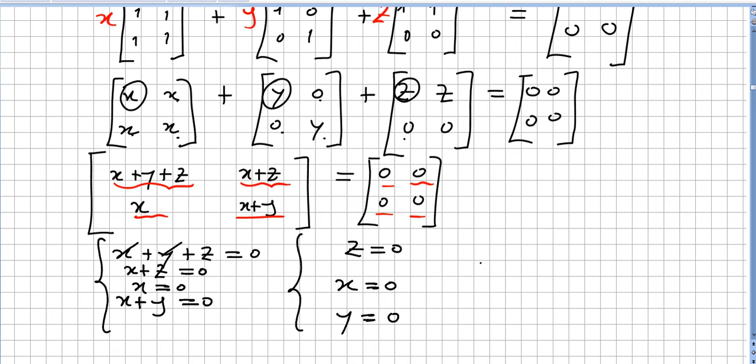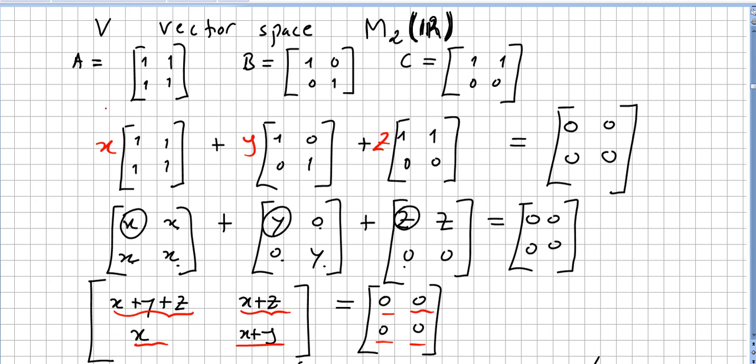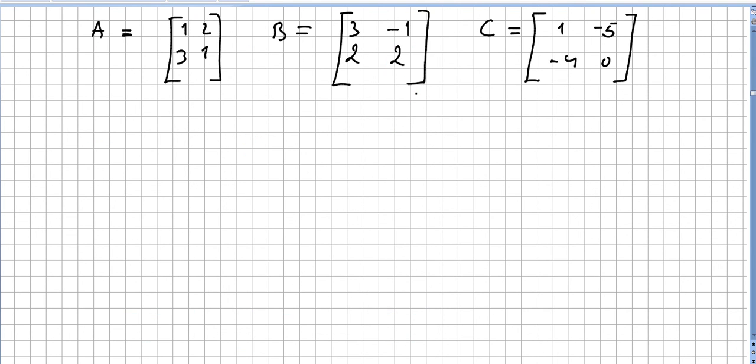So the only way that xA plus yB plus zC to be 0 is if x is 0, y is 0 and z is 0. So that means that A, B, and C are linearly independent. So our three original matrices, they are linearly independent. Let us do another quick exercise.